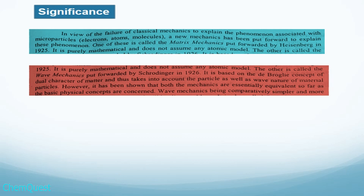Another mechanics was published in 1926. It was based on de Broglie's concept of the dual character of matter and takes into account both the particle and wave nature of material particles. So first, in 1925, Heisenberg proposed matrix mechanics as a purely mathematical model, and then in 1926, Schrödinger wave mechanics was developed based on the de Broglie hypothesis. I will add a link in the description if you want to study de Broglie's hypothesis in detail.